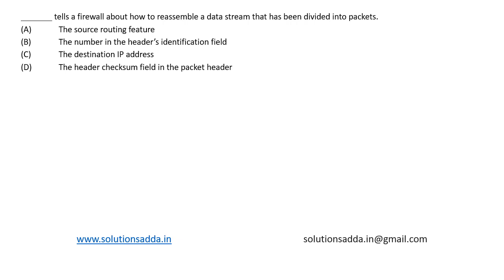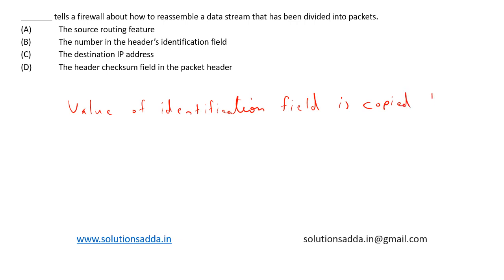When a datagram is fragmented, the value in the identification field is copied to all fragments. So the value of the identification field is copied to all fragments when the datagram is fragmented.